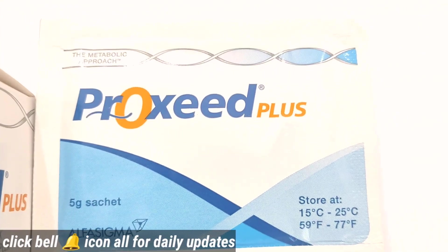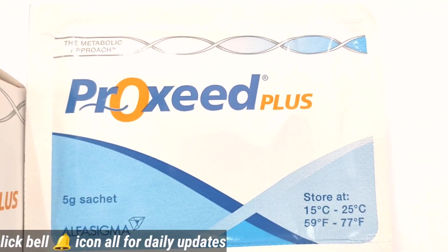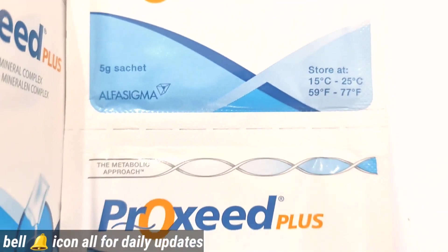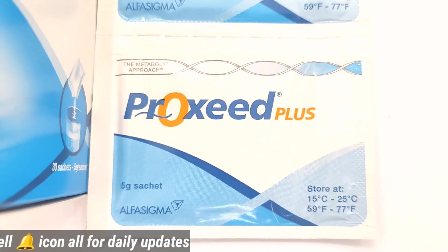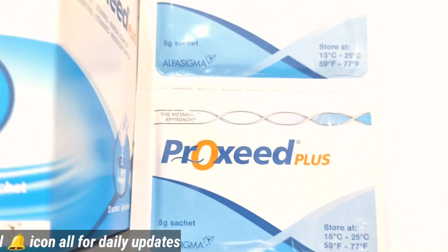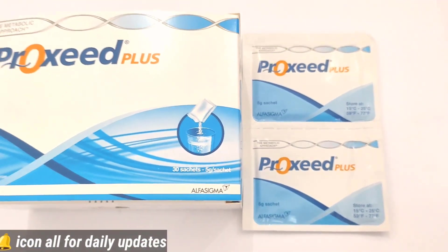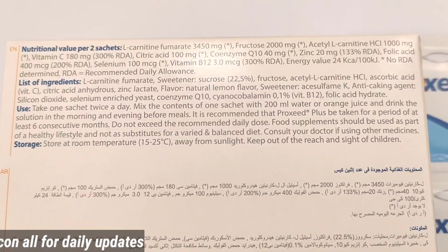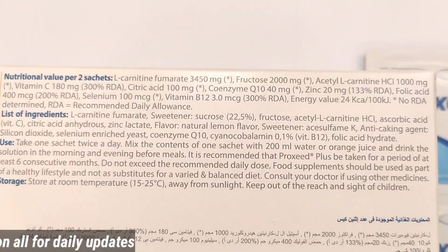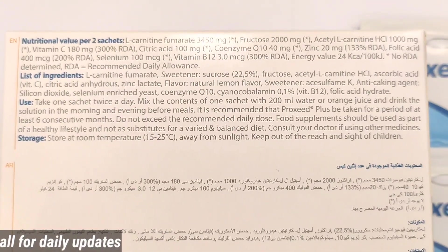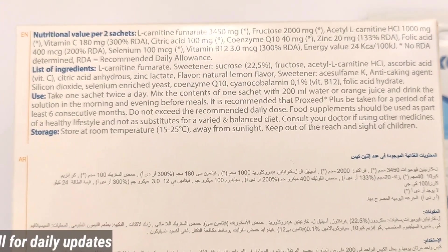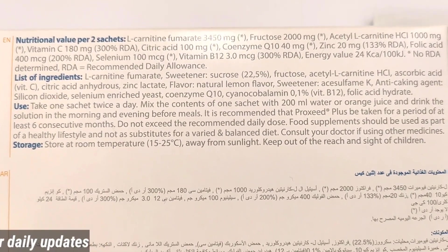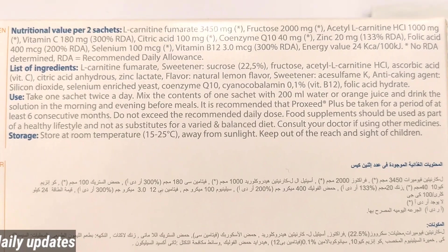The major uses and side effects have been discussed. It also comes with a long shelf life. It is mainly manufactured by the US pharmaceuticals company Alpha Sigma and is available for import and export to all countries. Proxit is also normally available, and Proxit Plus is specifically for persons who are suffering more, having problems of motility, morphology, DNA fragmentation, and reduced sperm count.